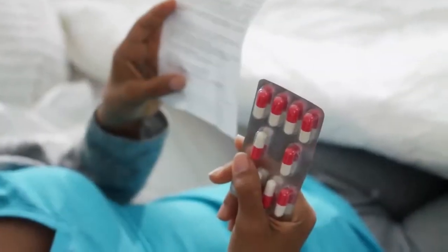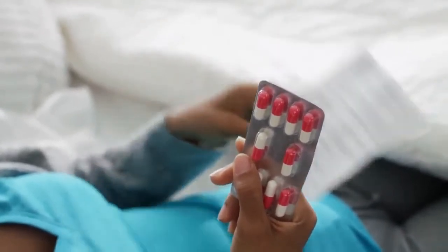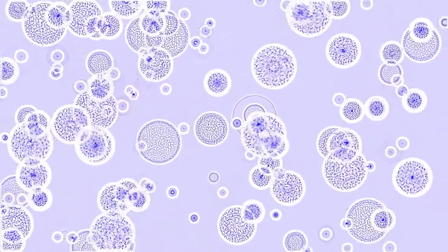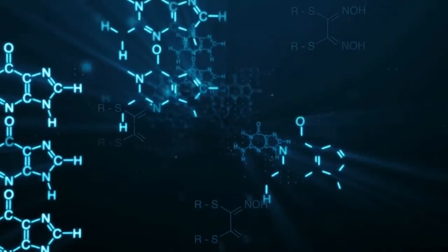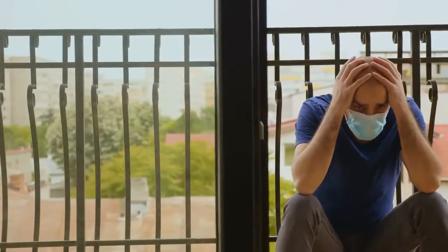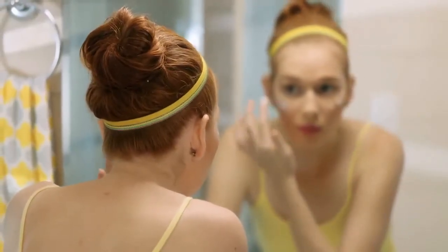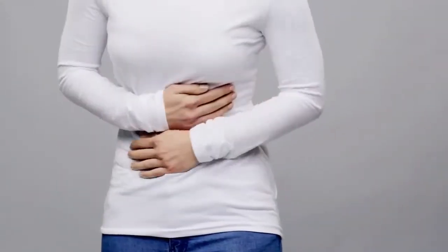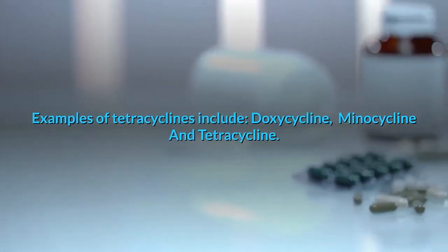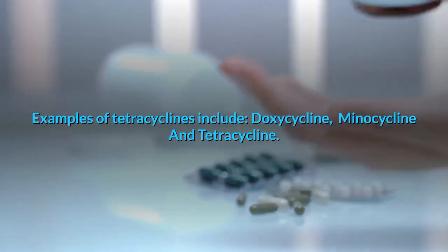Tetracyclines. These antibiotics come from a species of bacteria called streptomyces. It seems odd that a bacterium could produce an antibiotic that kills other bacteria, but it's true. Tetracyclines are bacteriostatic, like the sulfonamides. They treat various infections such as respiratory, skin, and genital infections. They also treat unusual infections including Lyme disease, malaria, anthrax, cholera, and plague. They have non-infectious uses as well, such as treating rosacea. Common side effects include stomach pain or upset, sun sensitivity, and yeast infections. Examples of tetracyclines include doxycycline, minocycline, and tetracycline.